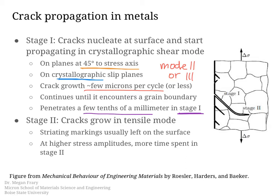The real crack growth during fatigue occurs in stage 2, where the crack reorients itself and grows in tensile mode — mode 1 loading. In many cases, striation markings are left on the fracture surface, indicating crack growth; however, these aren't always a reliable indicator of a single cycle, so some caution is needed. At higher stress amplitudes, more time is spent in stage 2, with the crack moving normal to the loading direction rather than in the stage 1 shear orientation.